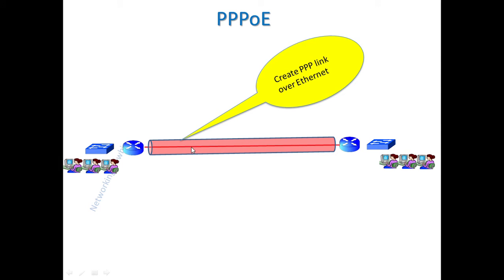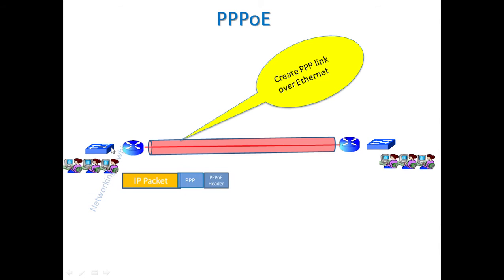The concept of PPPoE is that it will create a virtual tunnel or virtual link which will support a PPP link on top of the Ethernet link. When a user creates IP packets on one side of the network and the packet arrives at a certain point, a PPP protocol header and one additional PPPoE header are added to this IP packet.